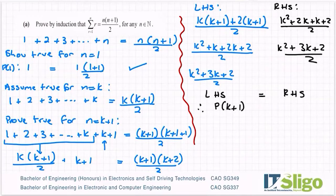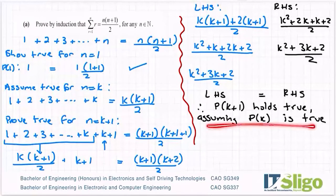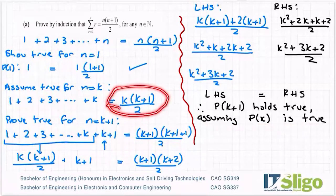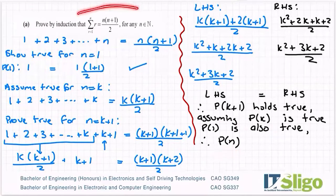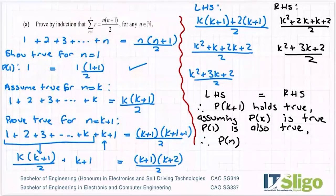So therefore, I have shown that the condition n is equal to k plus 1 holds true, assuming p of k is true. And I have to put that piece in because I made the assumption that it was true and then I used it as part of my proof. So that is why I have to include it here in the conclusion that p of k plus 1 holds true, assuming p of k is true. p of 1 is also true, which is the minimum number. Therefore, p of n, and p of n is just a function notation for whatever statement I was given, p of n holds true for all n an element of N, which I got from here.